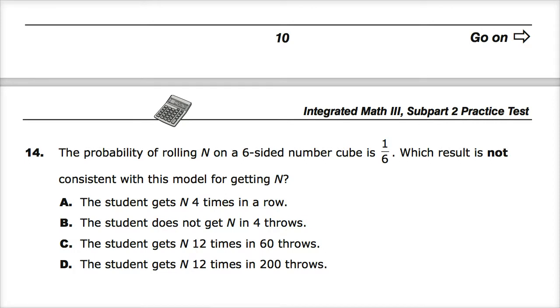The first choice, choice A, is the student gets N four times in a row. Now, it doesn't say that out of so many throws, it just says that they get four in a row. And if you rolled it 50 times, it's not unlikely you get four. If you rolled it 10,000 times, it's very likely you will get four times in a row. The more you do it, the longer you can string together the same number over and over again. So this is consistent with the model because we haven't limited ourselves to a number of throws.